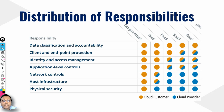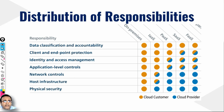Physical security is taken by the provider. In PaaS, data classification, client endpoint protection, and accountability are handled by the cloud client. Identity and access management is divided — you decide who gets access to an instance, but the instance sits in the cloud managed by AWS. Application-level control is also divided between customer and provider.